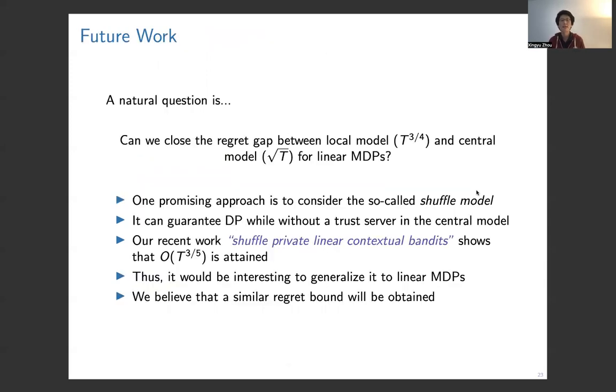For future work, one last question is: can we close the gap between the local model and the central model for linear MDPs? One promising approach is the so-called shuffle model. It's an intermediary model between the local model and the central model. It can guarantee DP without a trusted server in the central model. Just like the local model, the users do not trust the central server, but the shuffle model can also achieve privacy guarantee without trusting the server. Our recent work on linear bandits in the shuffle model shows that it enables us to achieve regret bound of T to the 3/5 power. So it's between the central model and the local model. It will be very interesting to generalize to the linear MDP settings. We believe it's a natural generalization and we believe a similar regret bound can be obtained for linear MDPs.